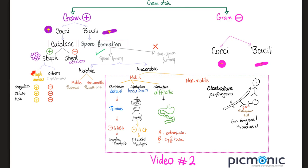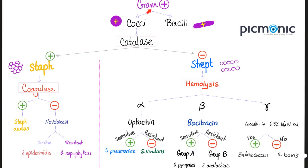The catalase-positive gram positive cocci are the staphylococci; catalase-negative are the streptococci. Among staphylococci, Staph aureus is coagulase positive, DNase positive, and MSA positive, while other staphs are coagulase negative. Streptococci are so named because they form chains — 'strept' means chains — while staphylococci form grape-like clusters. Streptococci are further divided by hemolysis: alpha, beta, or gamma hemolytic. Alpha-hemolytic strep are differentiated by optochin sensitivity: optochin-sensitive is Strep pneumoniae; optochin-resistant is the viridans group.